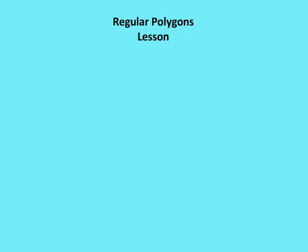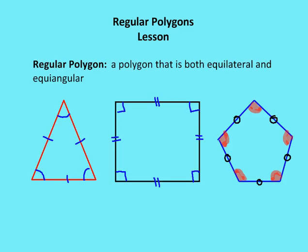Hello and welcome to Aughton Math. In this edition, we're going to talk about regular polygons. So what is a regular polygon? The definition of a regular polygon is a polygon that is both equilateral and equiangular.